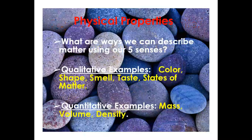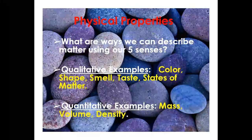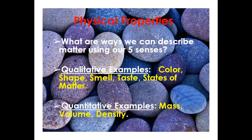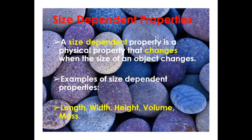There are two ways to describe matter: qualitative examples and quantitative examples. Qualitative examples include color, shape, smell, taste, and the state of matter — such as solid, liquid, or gas. Quantitative examples include mass, volume, and density.